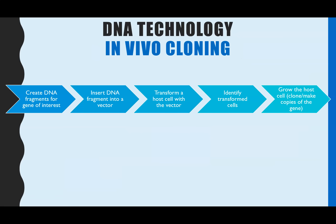In other words, if we have a look at all the stages, these are the last two steps we're going to go through in today's lesson: how you can identify which bacteria cells have taken up your vector, which will be the plasmid, and then how you grow them en masse to get lots of copies.